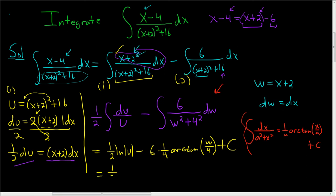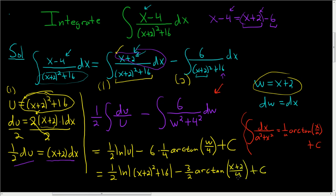So the final answer is (1/2)ln|(x+2)²+16| minus 6/4 is 3/2, and then we have arctan, and then the w was x+2, so (x+2)/4, and then we have the plus C. That's a 4, and that is good enough. So I hope this video made sense.